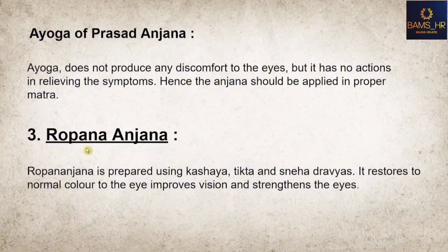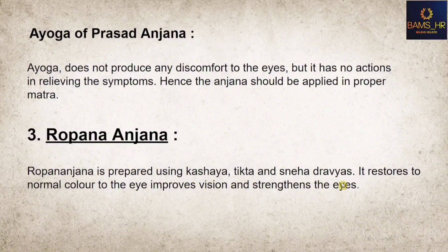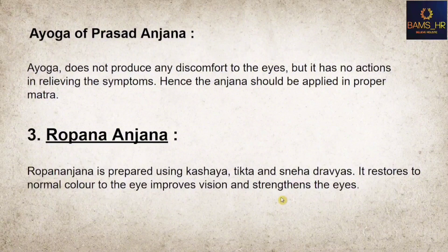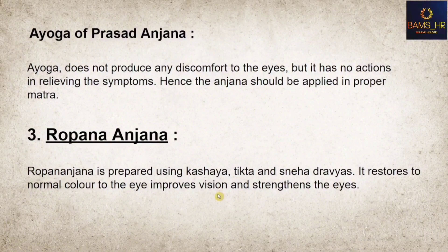Third type: Ropananjana. It is similar to Prasadhanjana in many aspects. Ropananjana is prepared using Kashaya, Tikta, and Snigdha dravyas — only the dravyas are differentiated. It restores normal color to the eye, improves vision, and strengthens the eyes. Remaining Atiyoga, Ayoga, and Hina yoga are similar to Prasadhanjana. This concludes the Anjana topic.